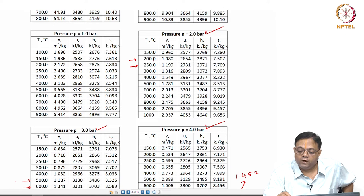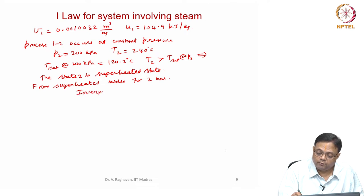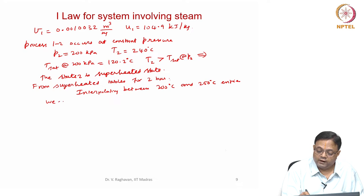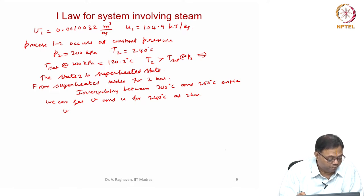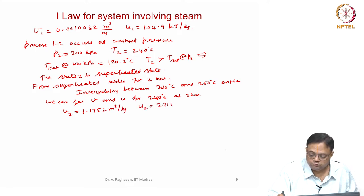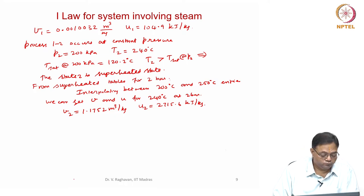From the superheated steam table at 2 bar, we need to interpolate between 200°C and 250°C entries because the given temperature is 240°C. At 200°C the specific volume is 1.08 m³/kg and at 250°C it is 1.199 m³/kg. Interpolating between 200 and 250 degrees centigrade entries, we get V2 = 1.1752 m³/kg and U2 = 2751.4 kJ/kg. State 2 is now fixed.